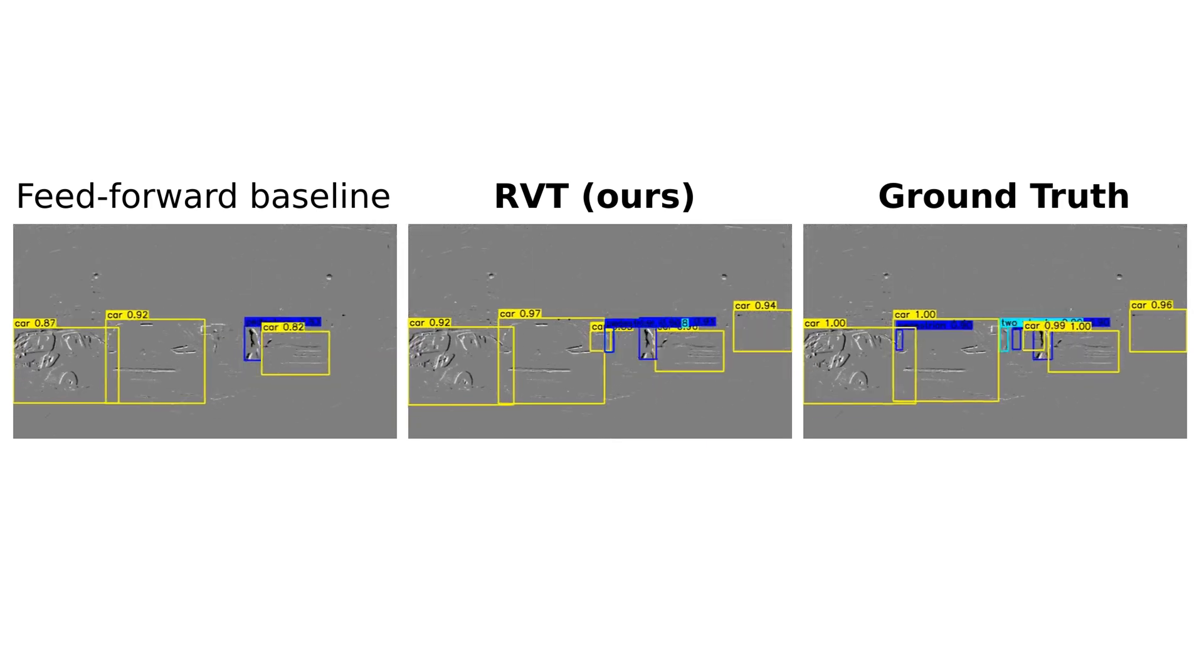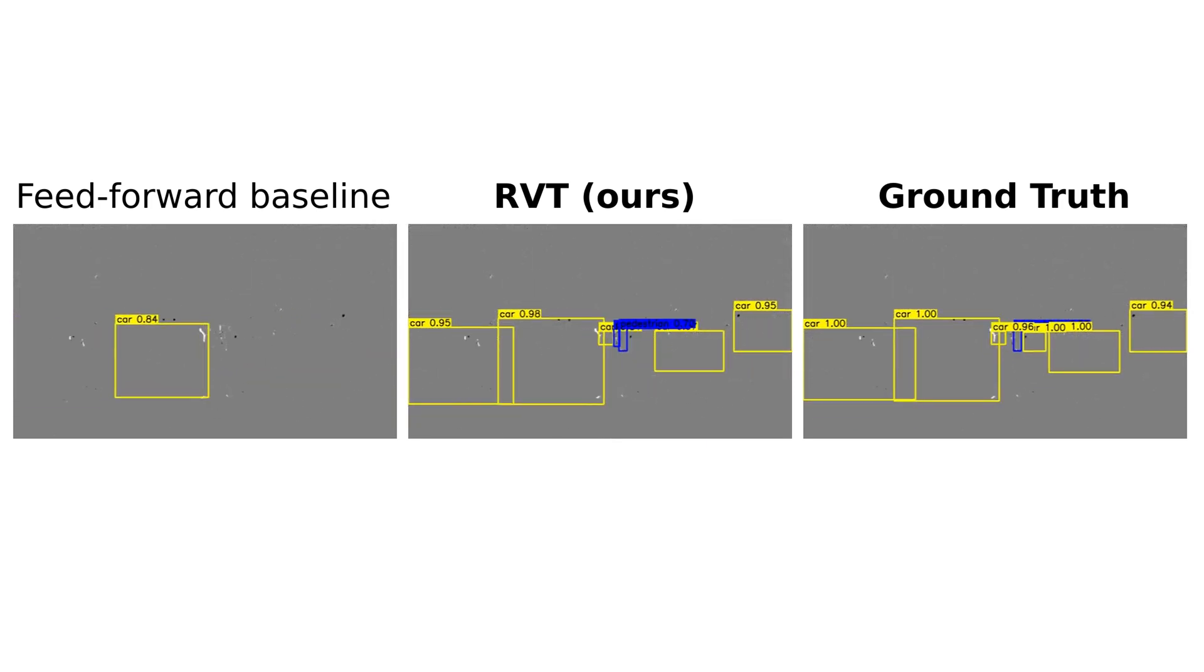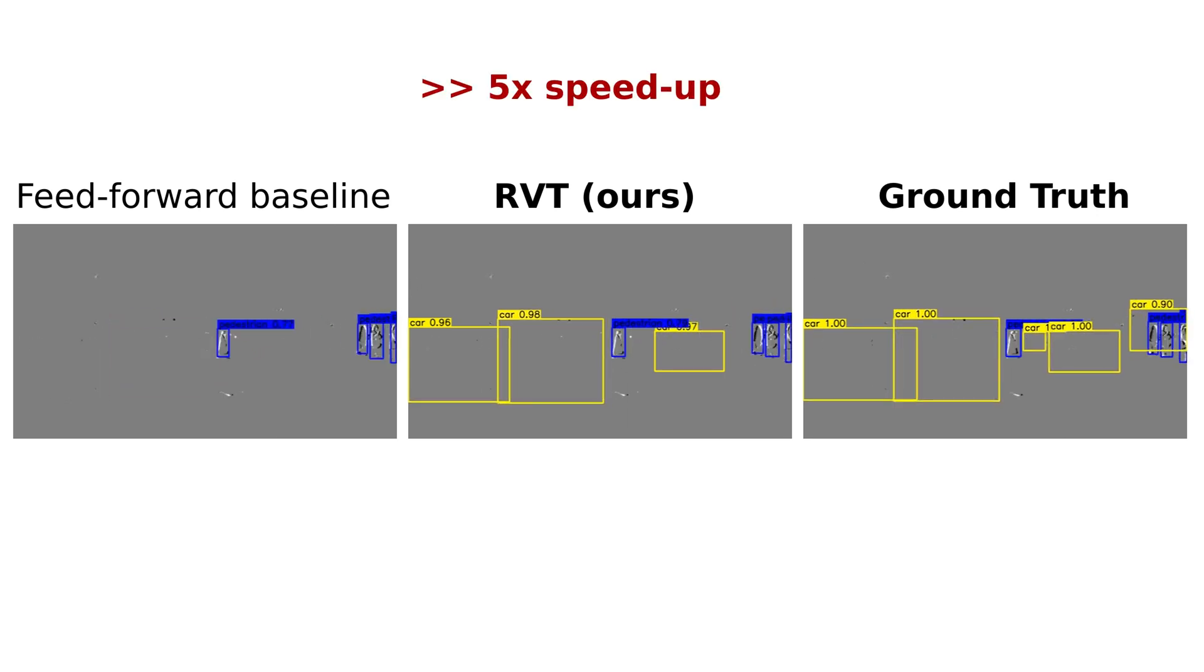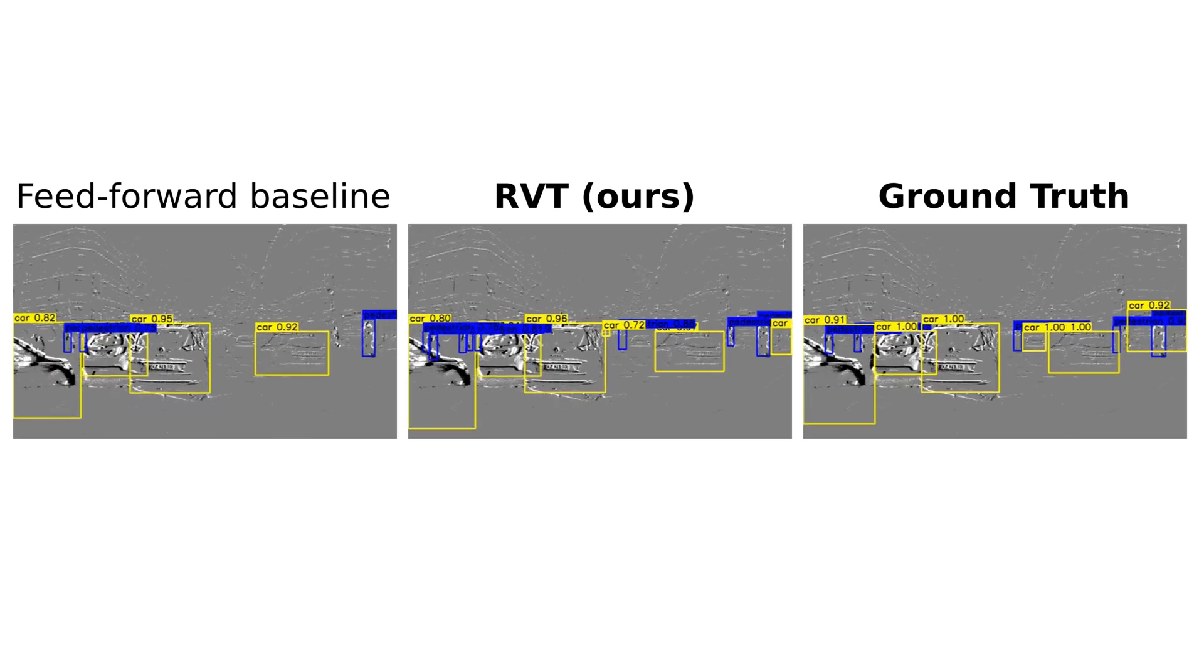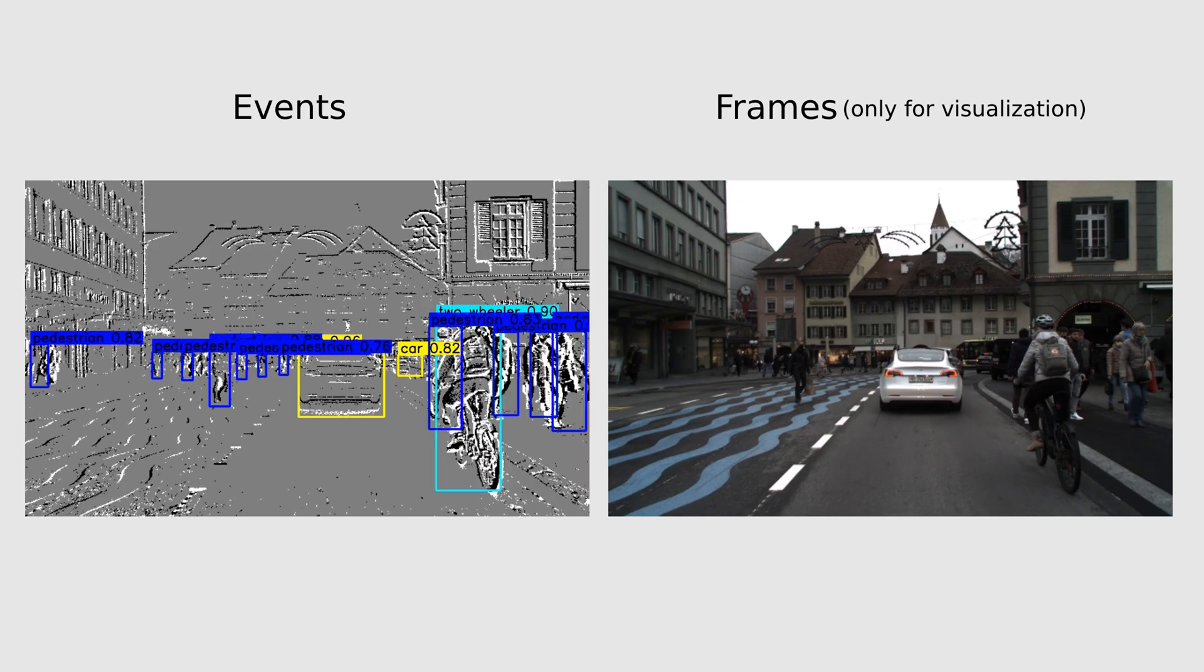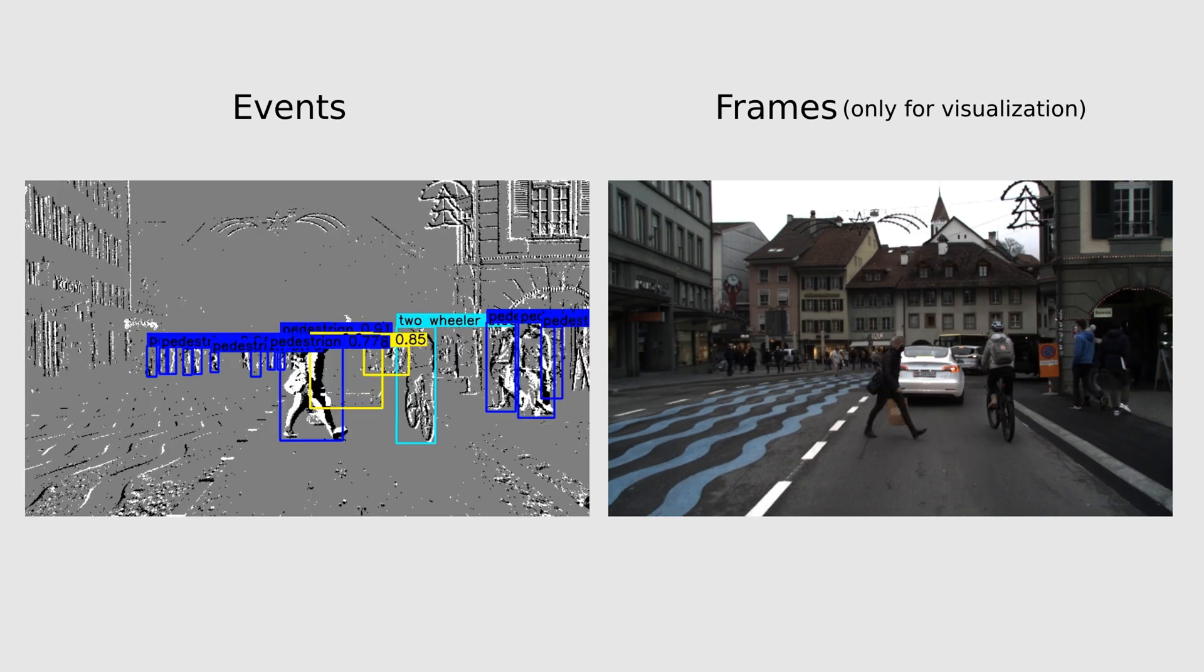Scenarios where objects move slowly or not at all relative to the camera pose a particular challenge. In these instances, the recurrent connections in the backbone can effectively maintain the relevant features for object detection.